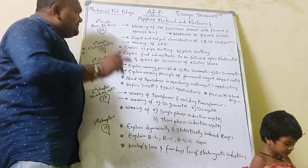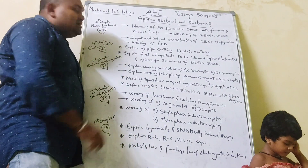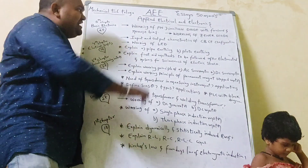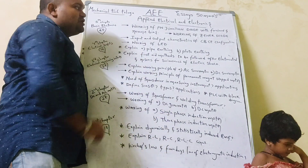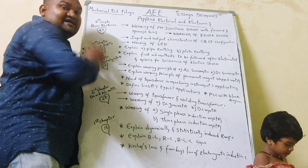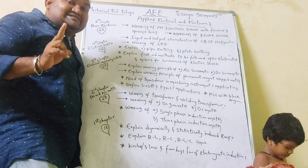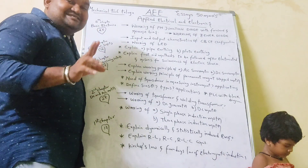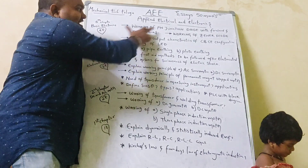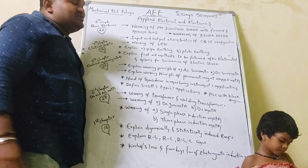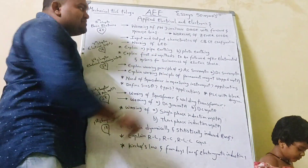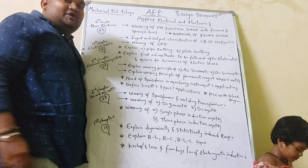First, you will refer to the 5th chapter. The chapter name is Basic Electronics. In this Basic Electronics chapter, you will have two essays with four questions. First: working of PN junction diode with forward and reverse bias, and working of JNR diode.